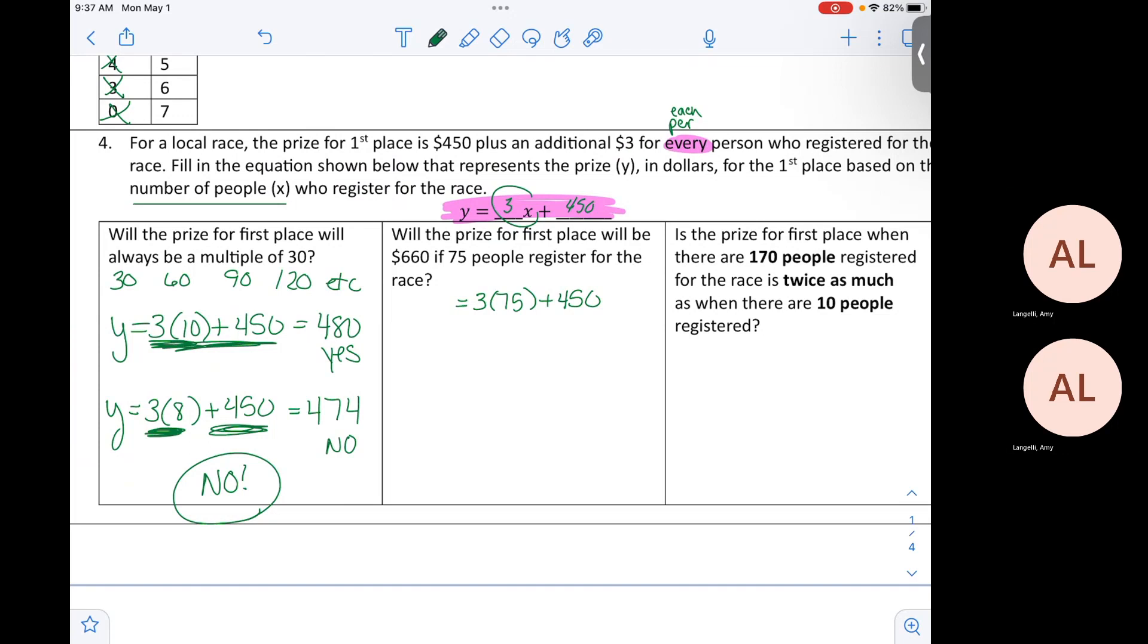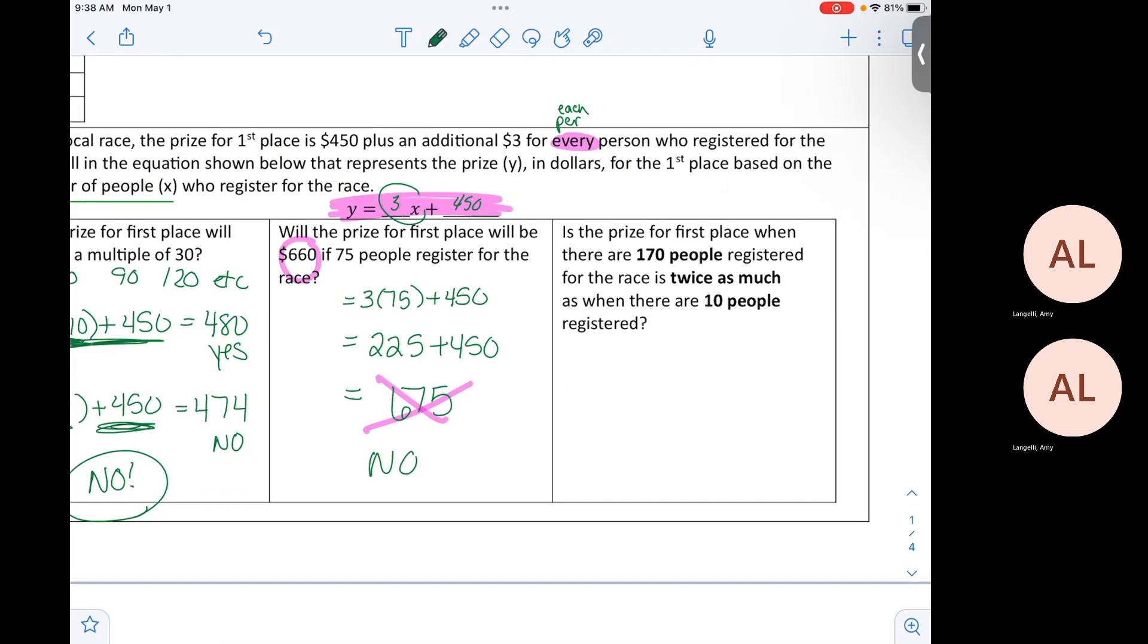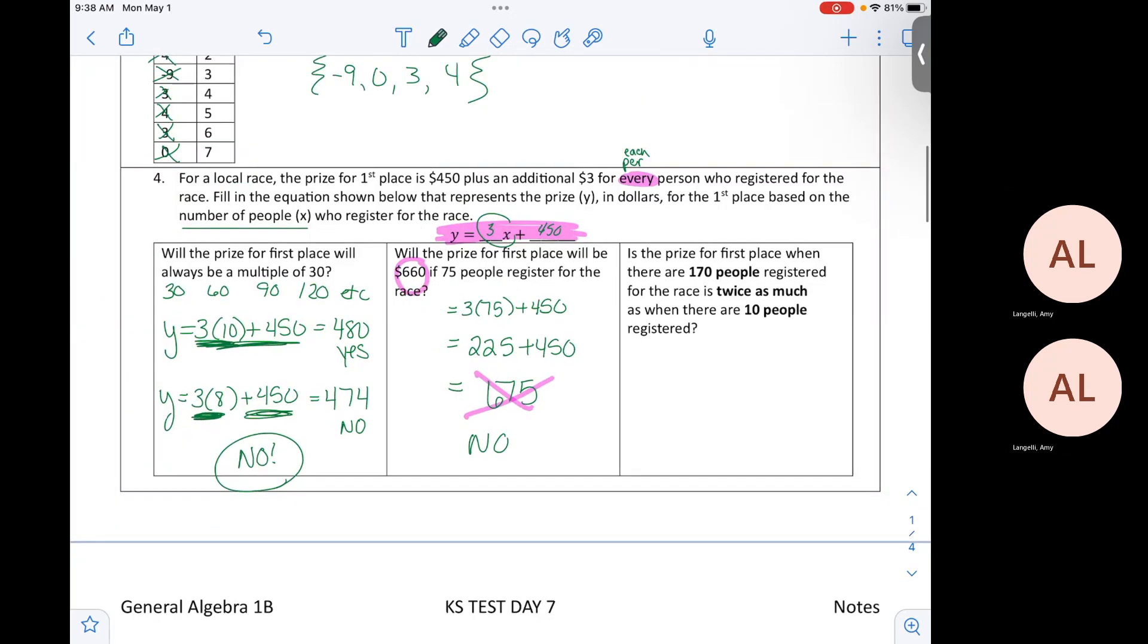Let's solve that. What is three times 75? I think it's 225. 225 plus 450, guys. 675, so did we get 660? So we'll just write no. So that is not a true statement. So it must mean that this one would probably be your true statement. Is the prize for first place when there are 170 people registered twice as much as when there are 10 people registered? Holy cow, how do we do this?